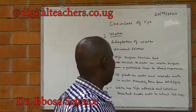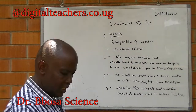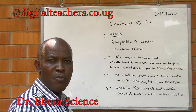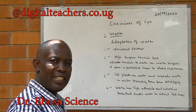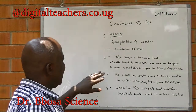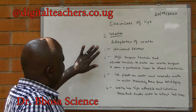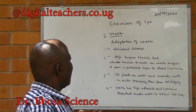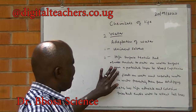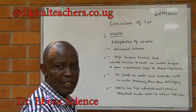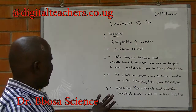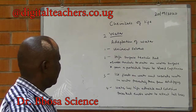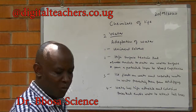Adaptations of water to its functions. One, it is a universal solvent — water virtually dissolves everything, from useful materials to waste products, to be transported to organs of excretion. Two, the high surface tension enables animals to walk on the surface of water. It also forms a protective layer on the blood capillaries, preventing them from bursting. Three, ice floats on water, which insulates water bodies in winter, preventing them from solidifying.